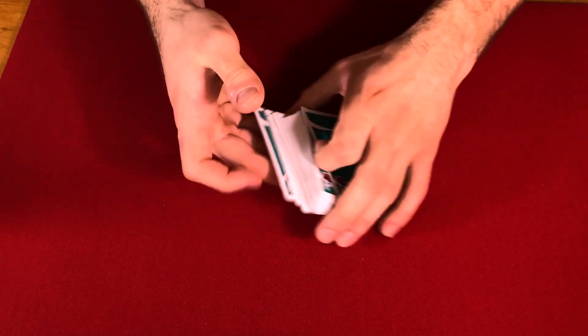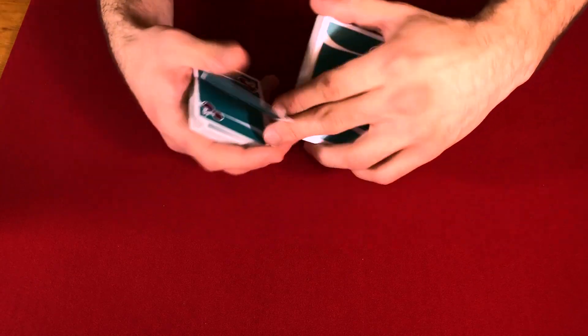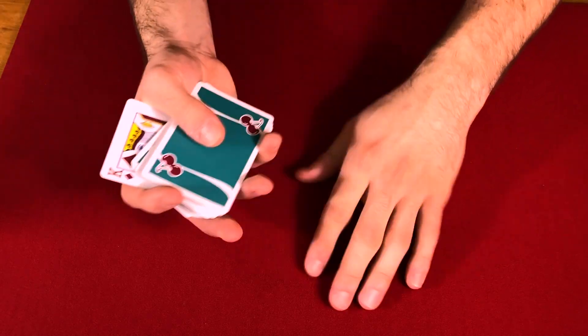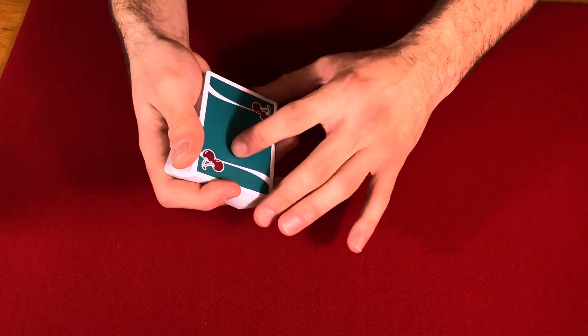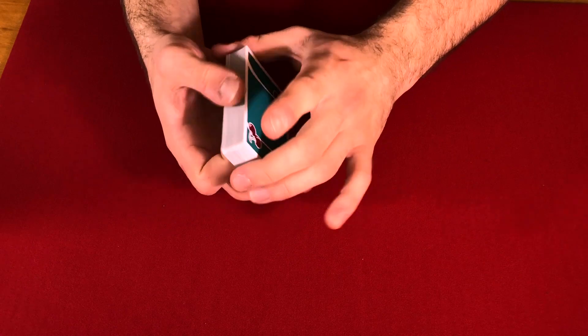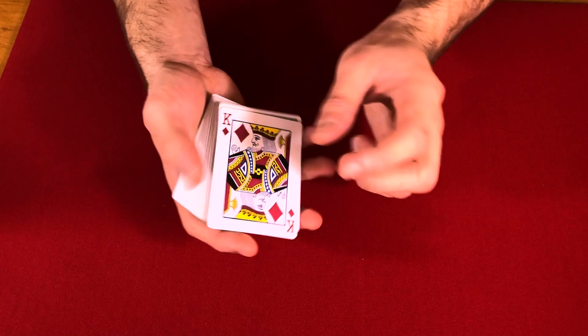So now let's try this again. We'll have anybody select a card. In this case we'll just use this card over here, the King of Diamonds. Have the card looked at and shown to as many people or as few people as you would like. And have the card placed in about middle of the pack and control it back to the top in any method you prefer.